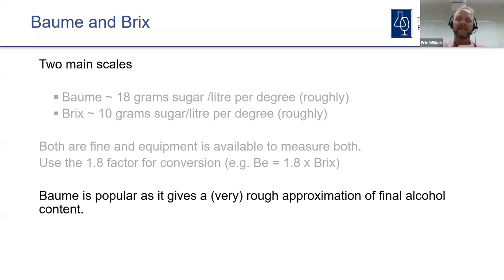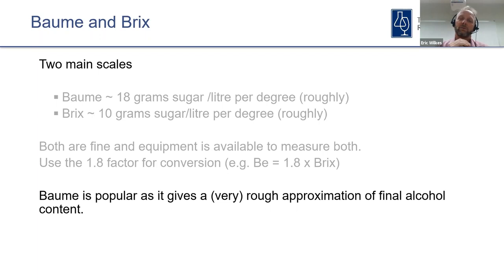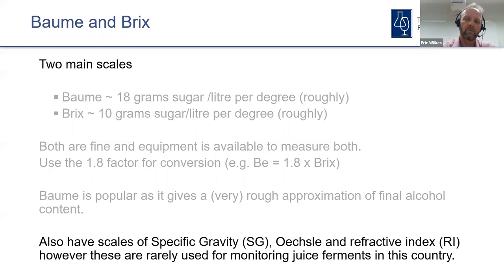Baumé is popular as it gives a very rough approximation of final alcohol content. The rule of thumb — which is used all over the industry — is that if you start off with a 13 Baumé juice you'll get a final wine which is 13% alcohol. It works within reason, but you just need to remember that it is a rule of thumb and it will never work out exactly that way. We will spend the second half of this talk addressing why it's only a rule of thumb.